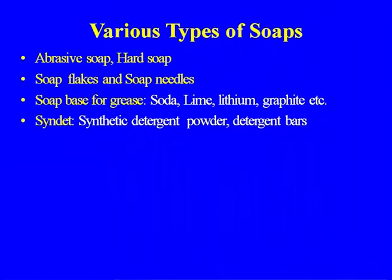Industrial soap types include abrasive soap, hard soap, and soap flakes — earlier used for washing, which have now been replaced with detergent powder. There are also soap needles and soap base for grease — including soda, lime, lithium, and graphite-based greases. The first step is making the soap, then adding the lubricating oil. Synthetic detergent powder and detergent bars have replaced the old soap used for cleaning purposes.